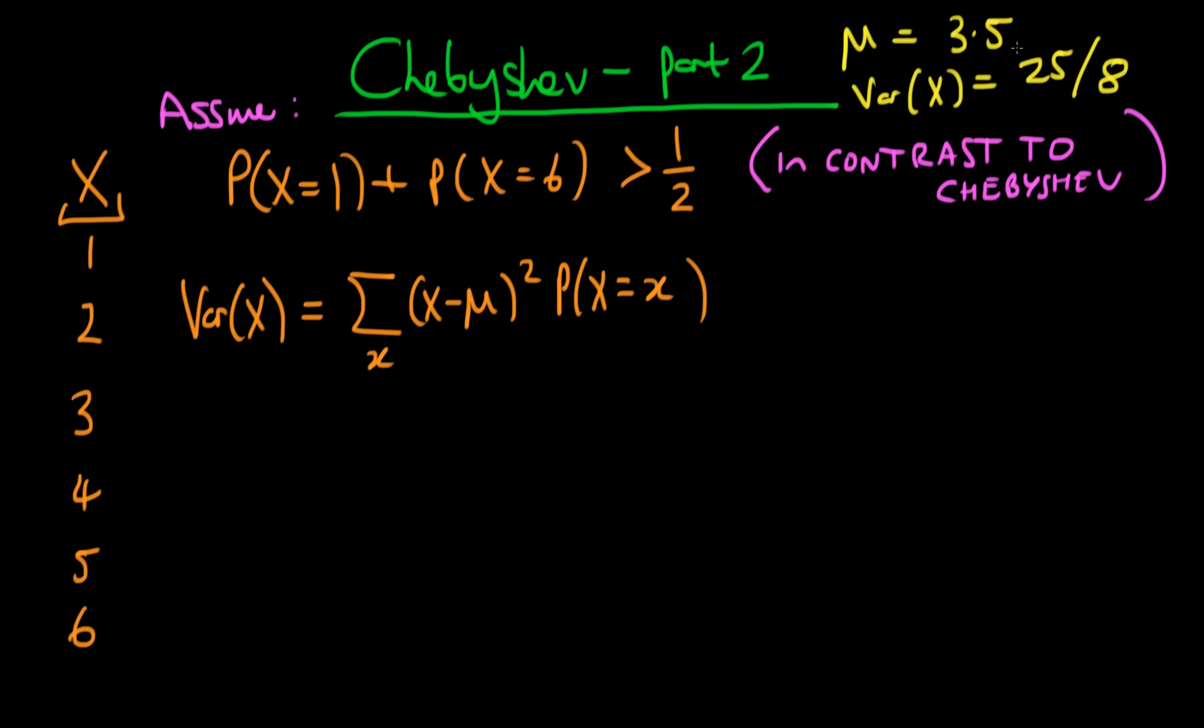Also, just to refresh your memory, we've assumed that the mean of the process x is three and a half and the variance is 25 over 8, and we're absolutely free to do that. That's basically equivalent to specifying the probabilities of each of these different x's occurring.